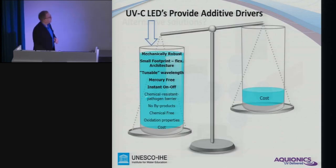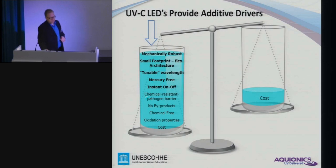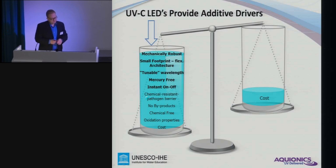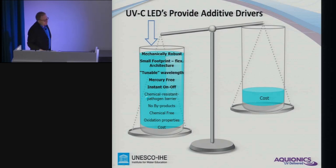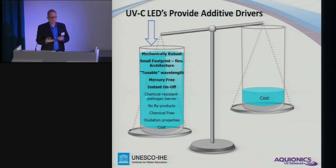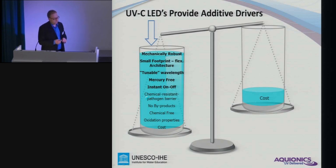If we look at the properties of LEDs, they are mechanically robust. If you drop an LED, it will not break — you could probably drive over it with your car and it will probably still be okay. Since it's a point source of light, it allows a completely different approach regarding product design and reactor design, because it's not predetermined by the geometrical shape of the light source. Also, the wavelength is tunable, so we can engineer various wavelengths depending on the needs.